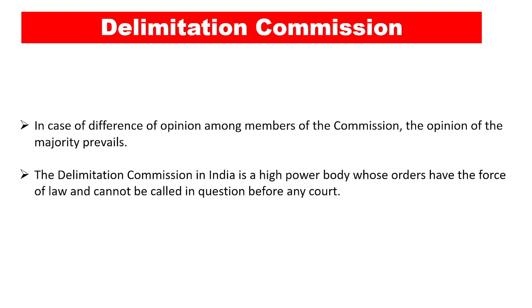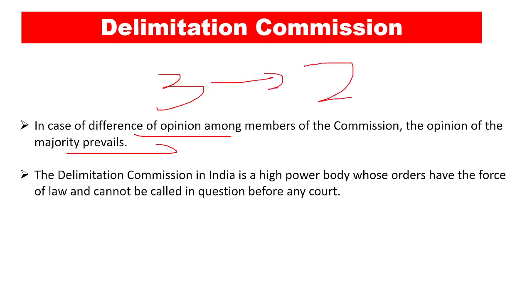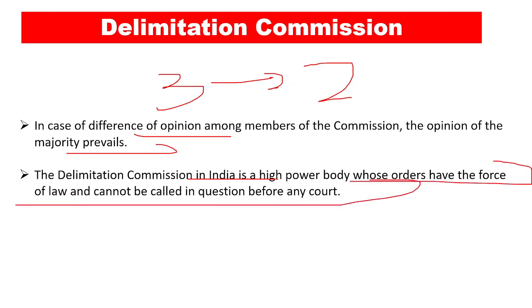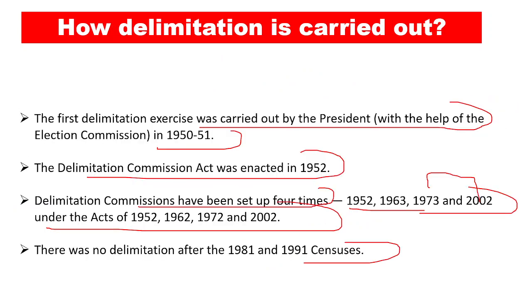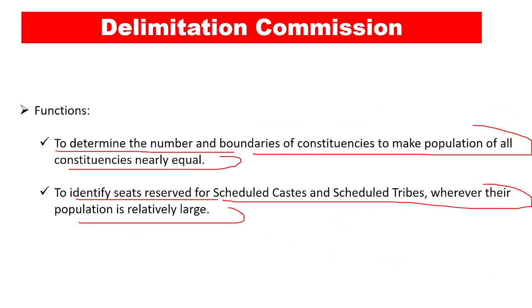The delimitation commission comprises three people who may have a difference of opinion. If a difference of opinion occurs, the opinion of the majority prevails — if two vote in favor of any judgment or action, that will happen despite one member not agreeing. The delimitation commission in India is a high-power body whose orders have the force of law and cannot be called into question before any court. This concludes the discussion on the delimitation commission, delimitation act, and how delimitation is carried out.